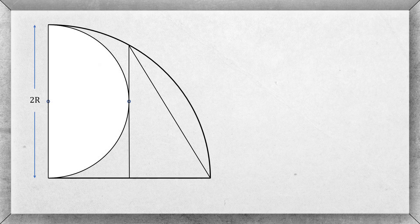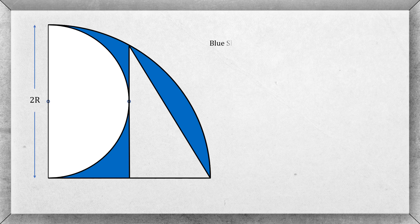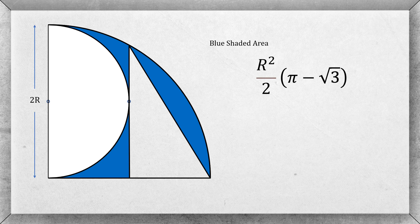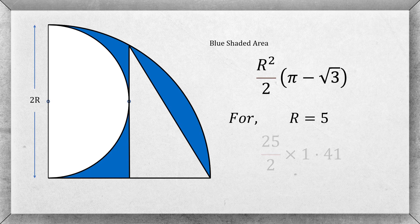Finally, the area of the blue shaded region is the area of the quarter circle minus the sum of the area of the semicircle and the triangle. The first two terms give us πr²/2. Taking r²/2 common from both terms, we get the area equal to (r²/2)(π − √3). This is the area of the blue shaded region. Since the diameter of the semicircle is 10, we have 2r = 10, therefore r = 5. Substituting r = 5 gives us an area equal to 17.62.